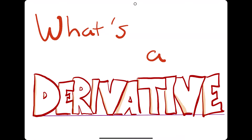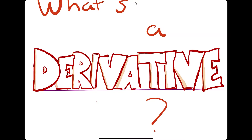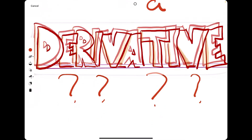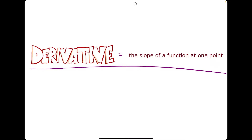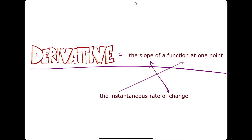What's a derivative? A derivative is just the slope of a function at one point, otherwise known as the instantaneous rate of change. Rate of change meaning slope, and instantaneous meaning at one point.